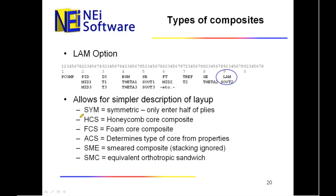The other options have to do with sandwich composites. If you have a honeycomb core composite, there are special things that happen. So if you put in HCS for the laminate option, it's going to look at your model and calculate those other output things. The same is true with FCS for foam core composite. There's also an automated option where it looks at the properties of your core and tries to figure out which it really is. We also have options that do smeared composites, where it ignores the stacking and just creates an equivalent orthotropic property and uses that.